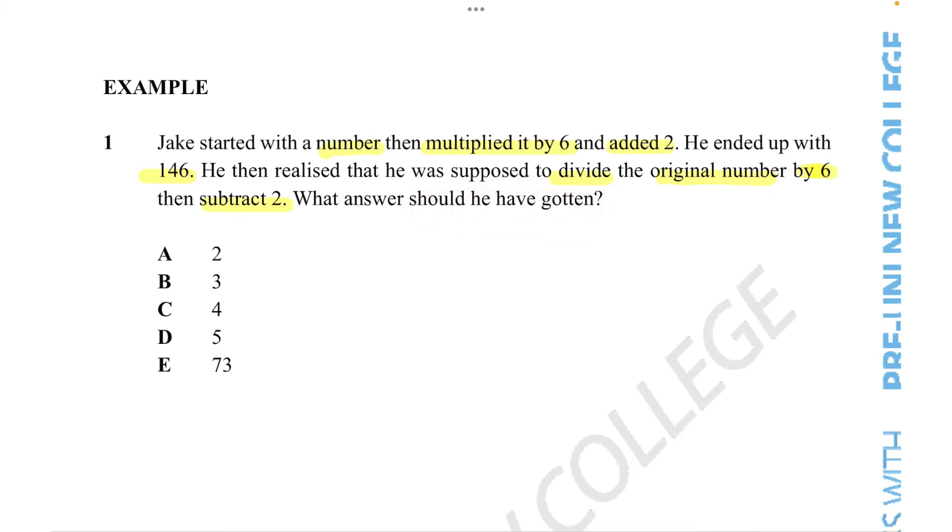So let's write this out as a number equation. We will use, once again, x to symbolize Jake's missing number. So in this word equation, we know that Jake's missing number is x. Then he multiplied it by 6 and added 2. And once he did that, he got 146. So we already have an equation.